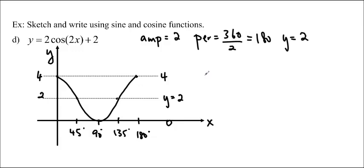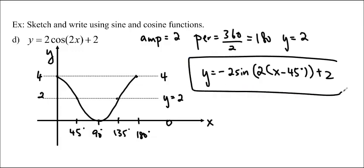So let's do sine. Let's use negative sine this time since it starts right there. Negative 2 sine 2x minus 45 degrees plus 2. The end.